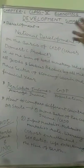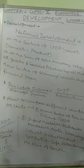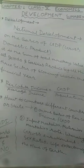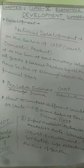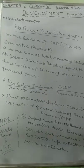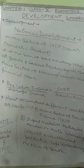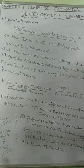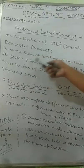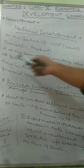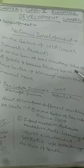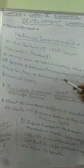The next topic is national development — Rashtriya Vikas. To measure national development, we measure it on the basis of GDP, Gross Domestic Product. GDP is the sum of total monetary value of all goods and services produced by all three sectors of the economy.